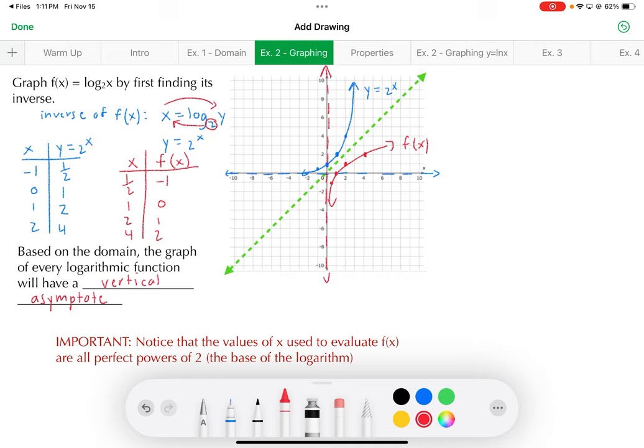All right, now, one thing I want you to notice is if you look at the input values for x in red here, what are they? 1 half, 1, 2, 4. Those are all perfect powers of 2, which is the base of the logarithm. So, that actually gives me another strategy for how I can graph these functions, which we'll apply in a later example. It's all about the base of the logarithm. If you input, for the argument, perfect powers of the base, you'll get the logarithm to evaluate nicely.